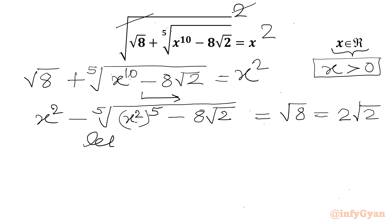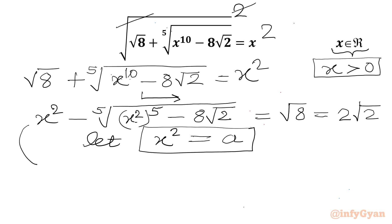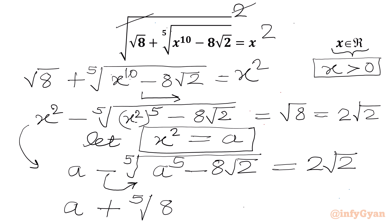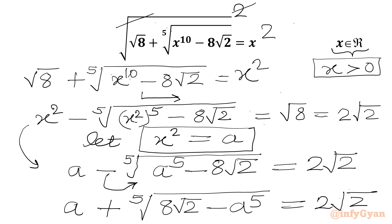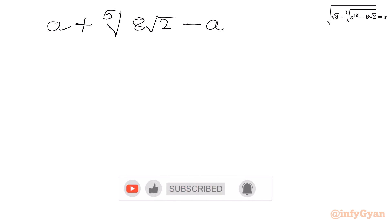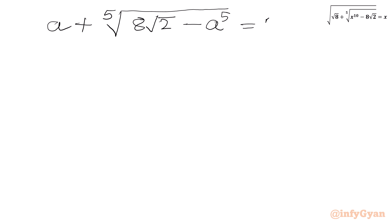Now I will consider our substitution. Let A = x². So I can write the equation as: A minus the 5th root of (A^5 − 8√2) equals 2√2. Taking the −8√2 into the radical, we can write: A plus the 5th root of (8√2 − A^5) equals 2√2.